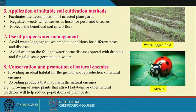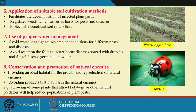Number 6 is application of suitable soil cultivation methods. Proper tillage facilitates decomposition of infected plant parts, regulates weeds that serve as hosts for pests and diseases, and protects beneficial soil microflora. Properly created nursery beds also support the growth of beneficial microbes, which helps minimize harmful microbe populations.